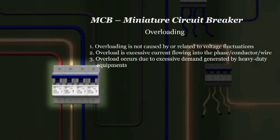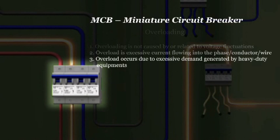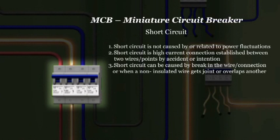Overloading is not related to voltage fluctuation at all. It is the excessive flow of current due to demand generated by heavy-duty equipment. Similarly, short circuit is also not related to power fluctuation — it simply occurs due to a high current connection between two wires established accidentally, or when a non-insulated wire overlaps another.